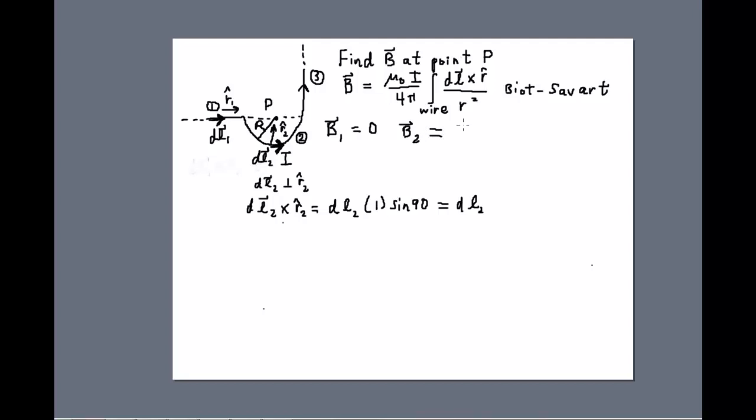We're going to work this out directly from the use of the Biot-Savart law. So we have mu naught i over 4pi times the integral of what is now simply dL2 over the distance squared, R2. Well that R vector is simply the radius of the circle. So that would become R2 and we're integrating along the length of the wire. So what we see then is the R comes outside the integral, we have mu naught i over 4pi big R squared.